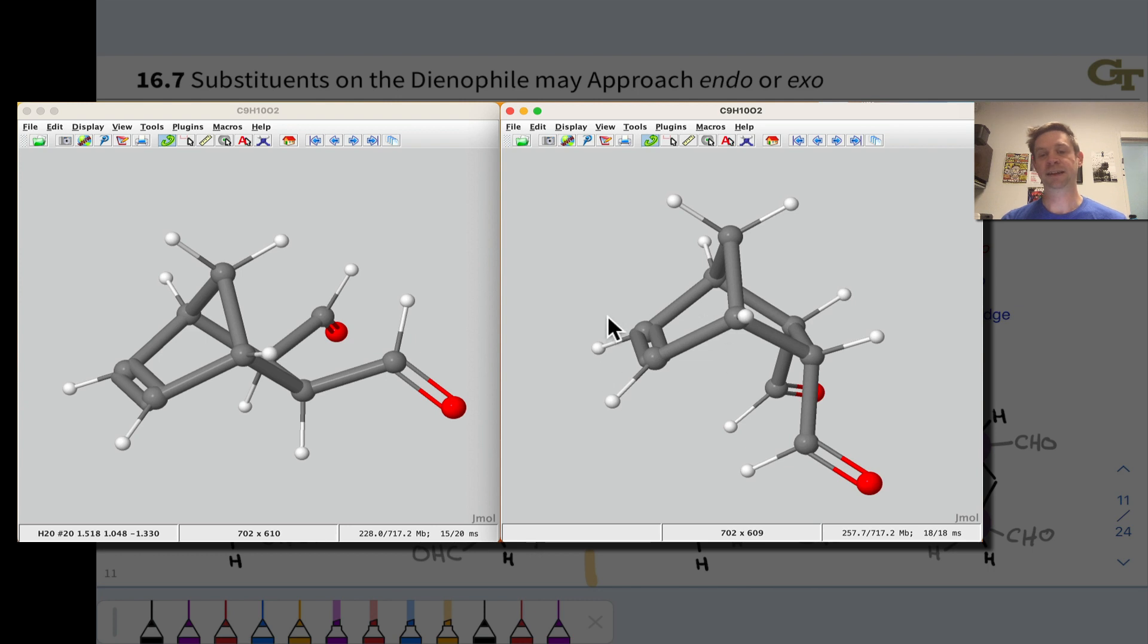And so, as we would say, these are syn, the carbon-carbon double bond, the alkene, and the aldehyde groups are syn in the endo product, and anti in the exo product.